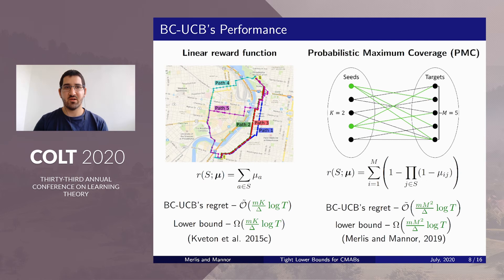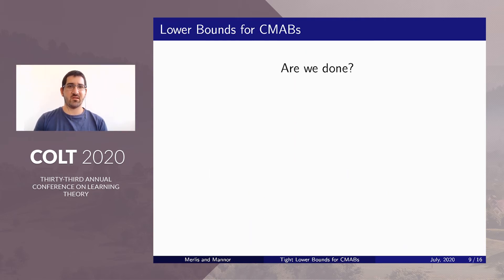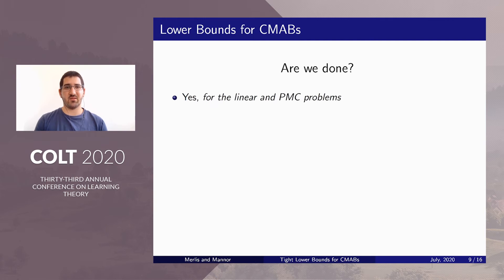Going back to our examples, we observed that BCUCB achieved tight performance on both examples up to logarithmic factors. So the only question that remains is whether we're done. It seems like we have upper bounds and lower bounds, so we can move to improving logarithmic factors or other variants. For the linear and the PMC problem, in this specific problem definition, we are roughly done up to logarithmic factors.